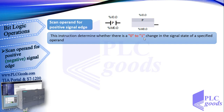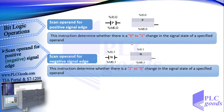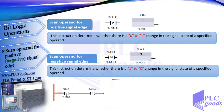Similarly, we have scan operand for negative signal edge. This works based on a one-to-zero change in the signal state of a specified address. This instruction is sensitive to a one-to-zero change at the I0.1 address.